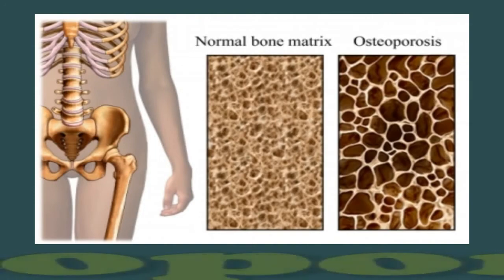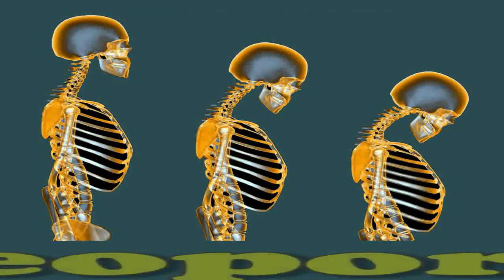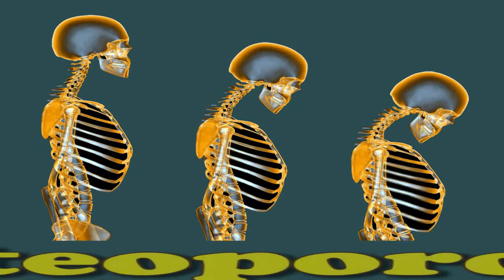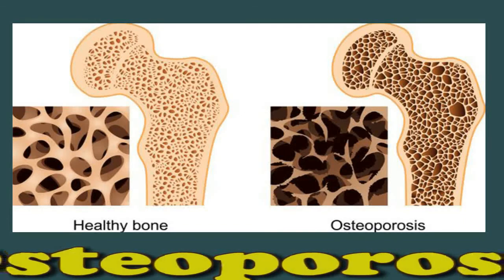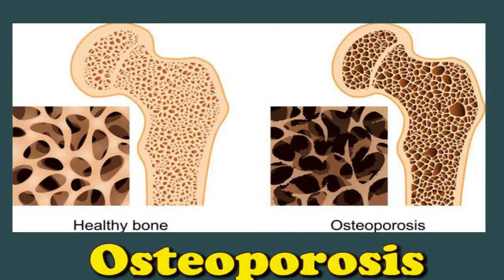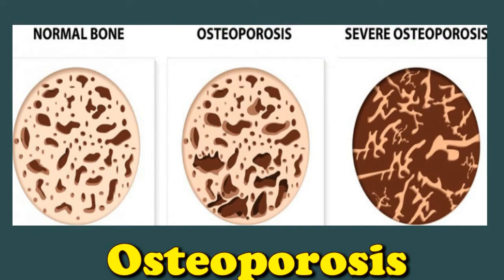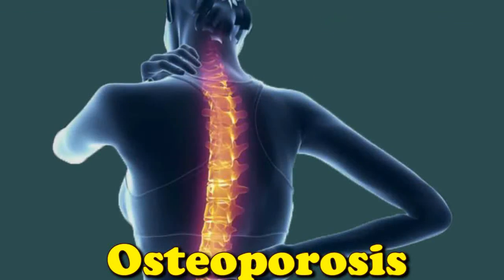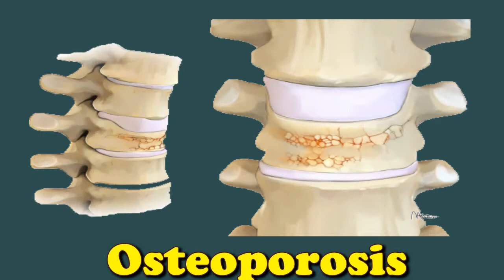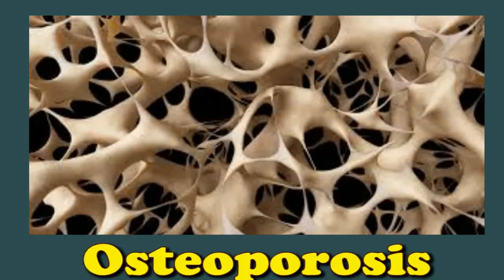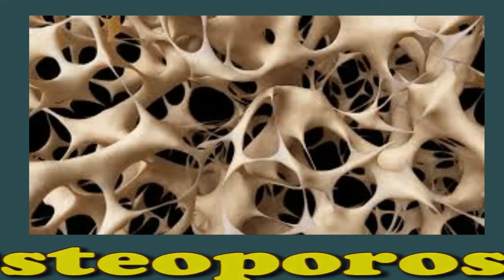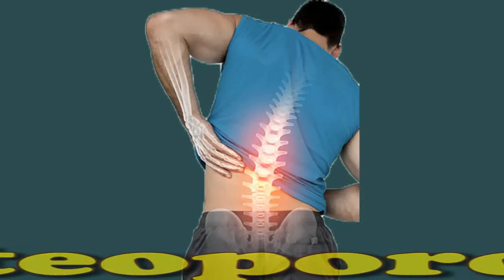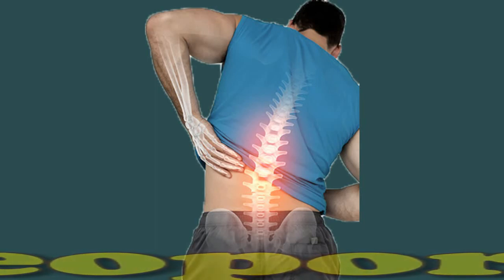Osteoporosis develops when bone density decreases — the body reabsorbs more bone tissue and produces less to replace it. In people with osteoporosis, the bones become porous and weaker, increasing the risk of fractures, especially in the hip, spinal vertebrae, and some peripheral joints such as the wrists. The International Osteoporosis Foundation estimates that over 44 million people in the United States currently have osteoporosis.